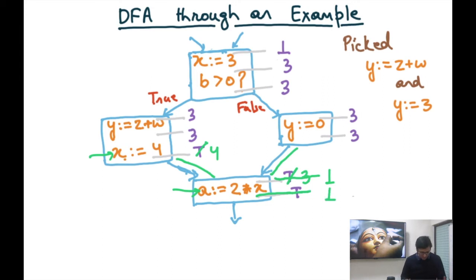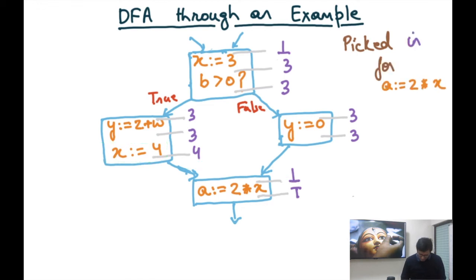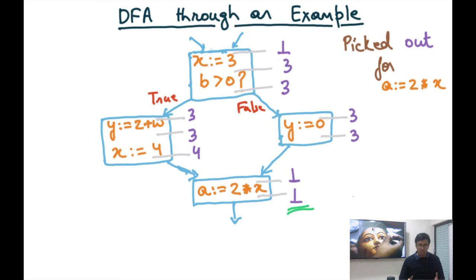Regardless of the order chosen — first updating x:=4 to get out=4, then the merge point becomes bottom (since inputs are 3 and 4), and the out of a:=2*x becomes bottom — we reach a state where all values satisfy all our rules. No statement or program point violates any of the 8 rules. This is our fixed-point solution.